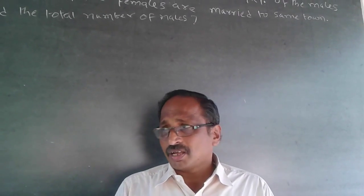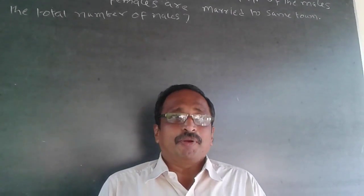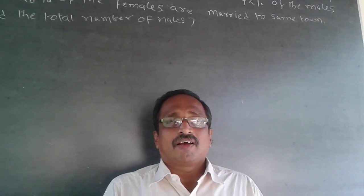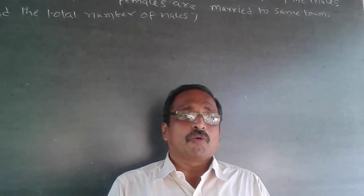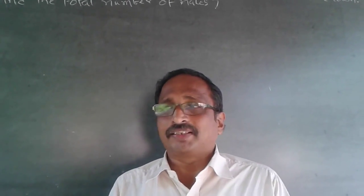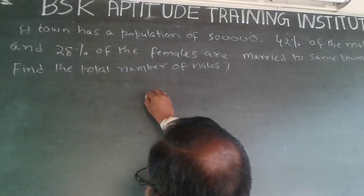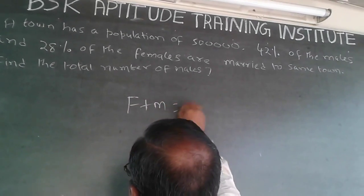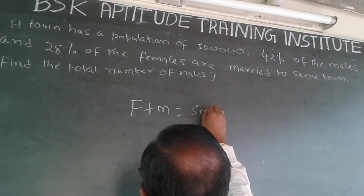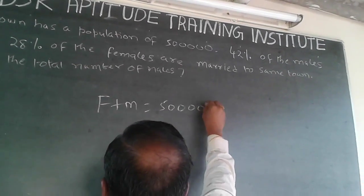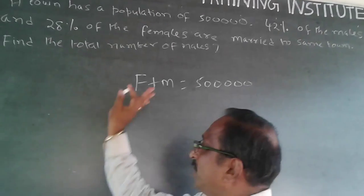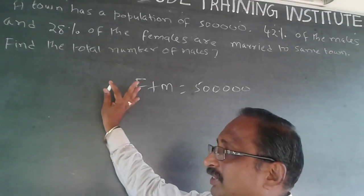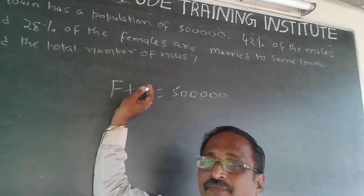Whenever I talk about population, it can only comprise of females and males. So F plus M will be equal to 5 lakhs. F is a number and M is a number — these are purely numbers.